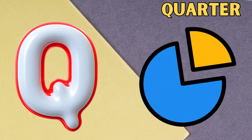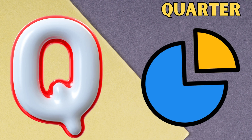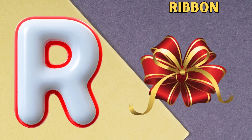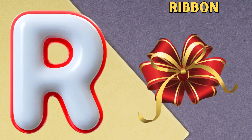Q is for quarter, kw, quarter. R is for ribbon, r, ribbon.